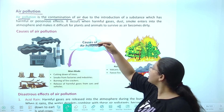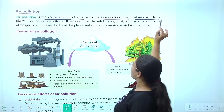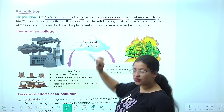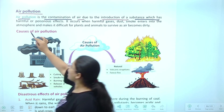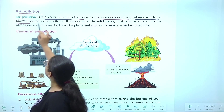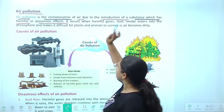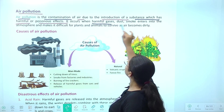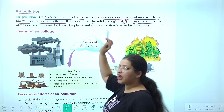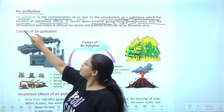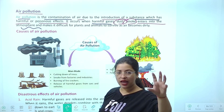Air pollution matlab air mein contamination due to introduction of a substance jiske nuksan-daayak ya zehrile effects hote hain — poisonous or harmful effects. Harmful gases like dust, smoke enter the atmosphere. Companies se black color ka sooty smoke nikalata hai — kuch gases companies vagera se release hoti hain.